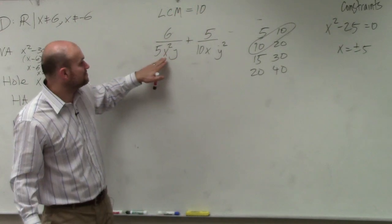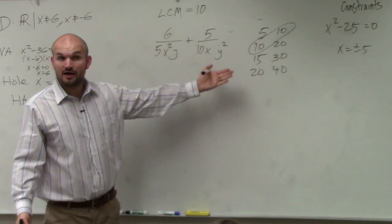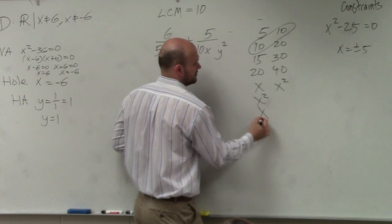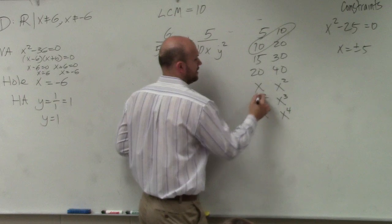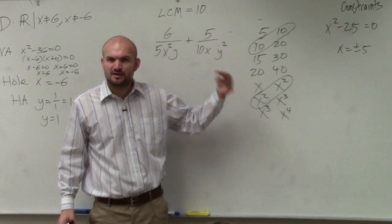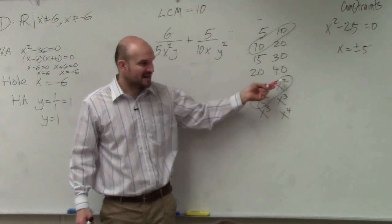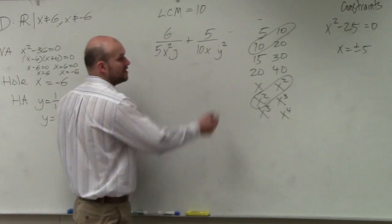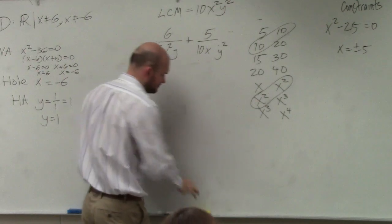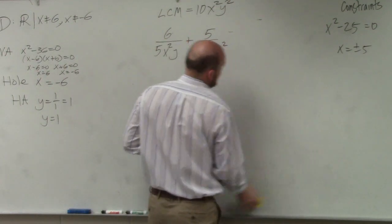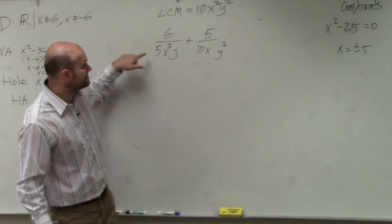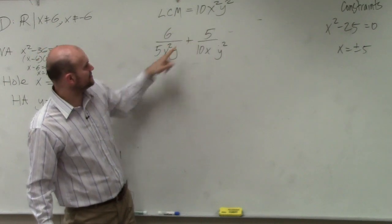Now we want to find the smallest multiple that x² and x both divide into. If you have trouble, list the multiples of x² and x. x² divides into all of them — because when we divide variables we subtract exponents — so the smallest x term is x². And y and y² gives us y². So our least common multiple is 10x²y².